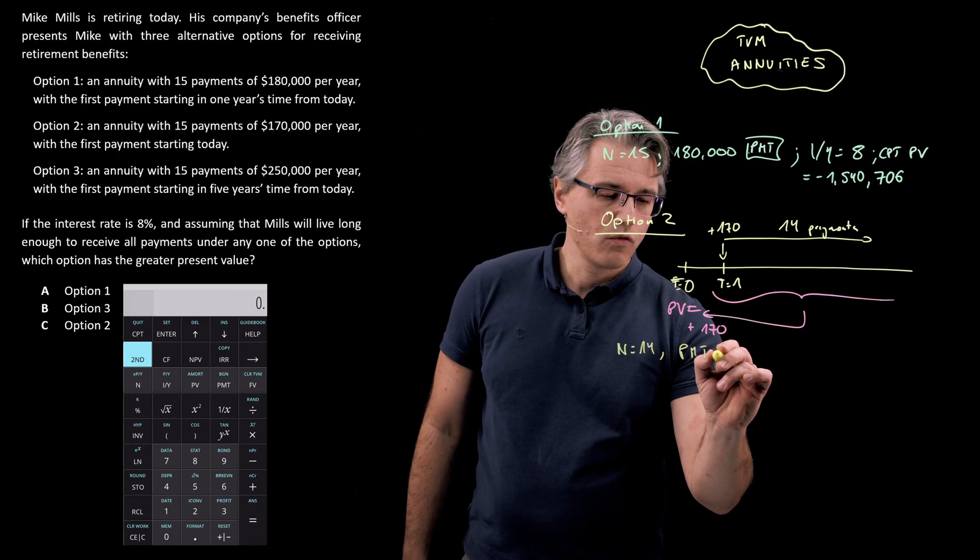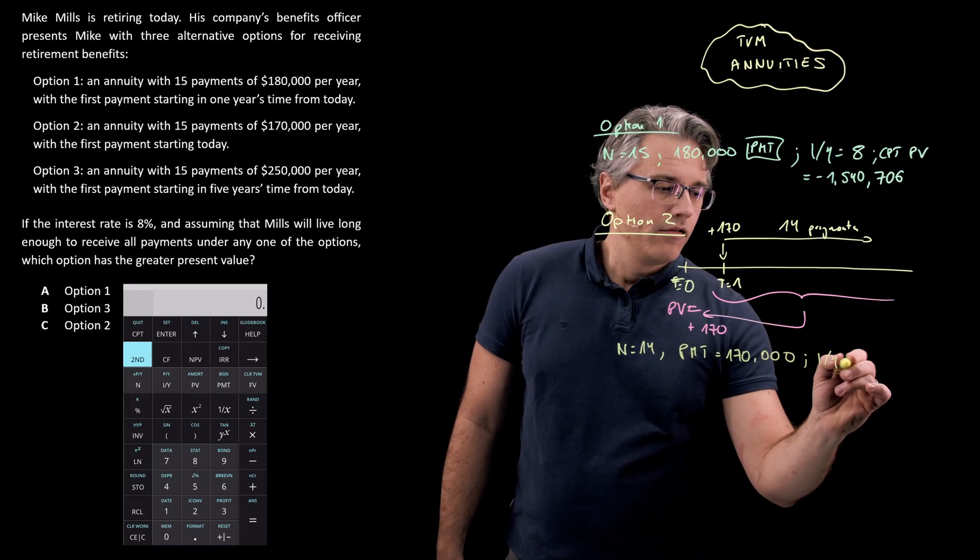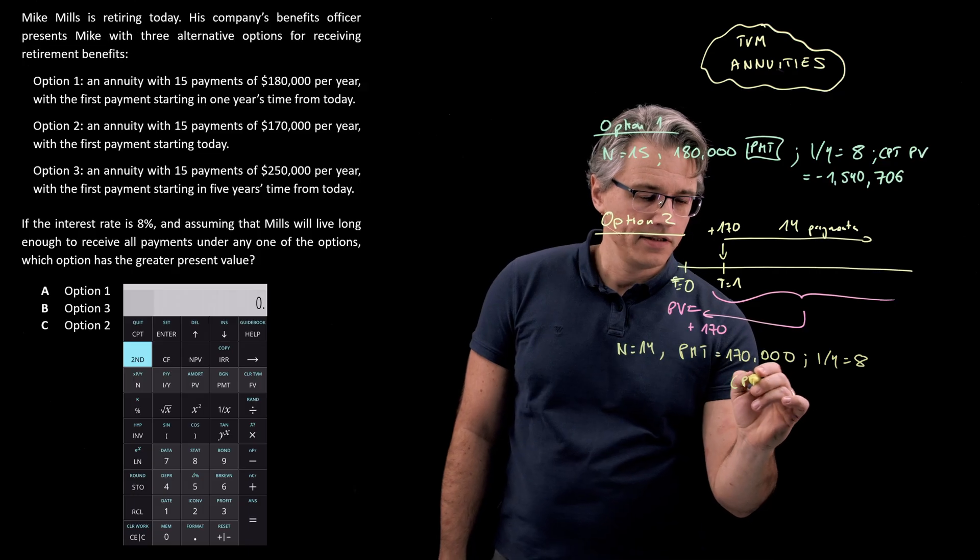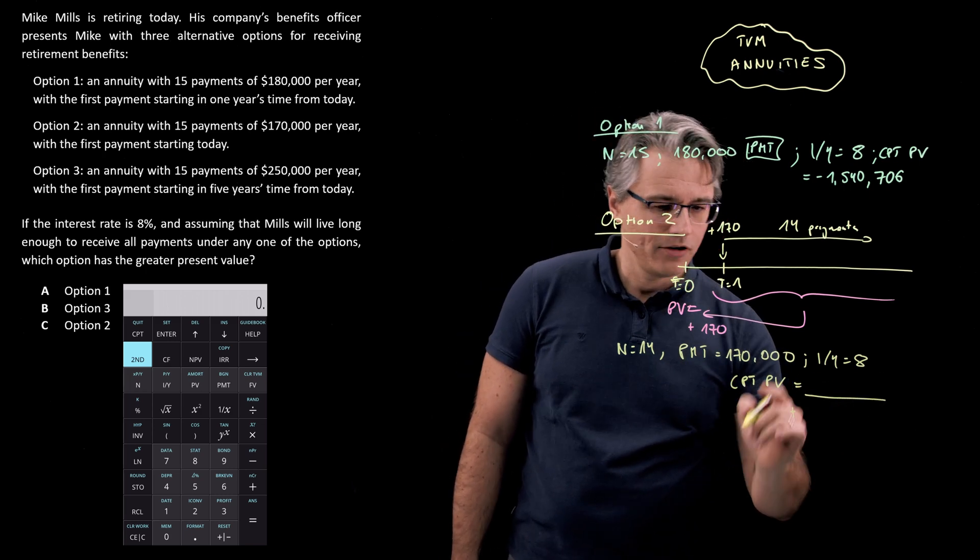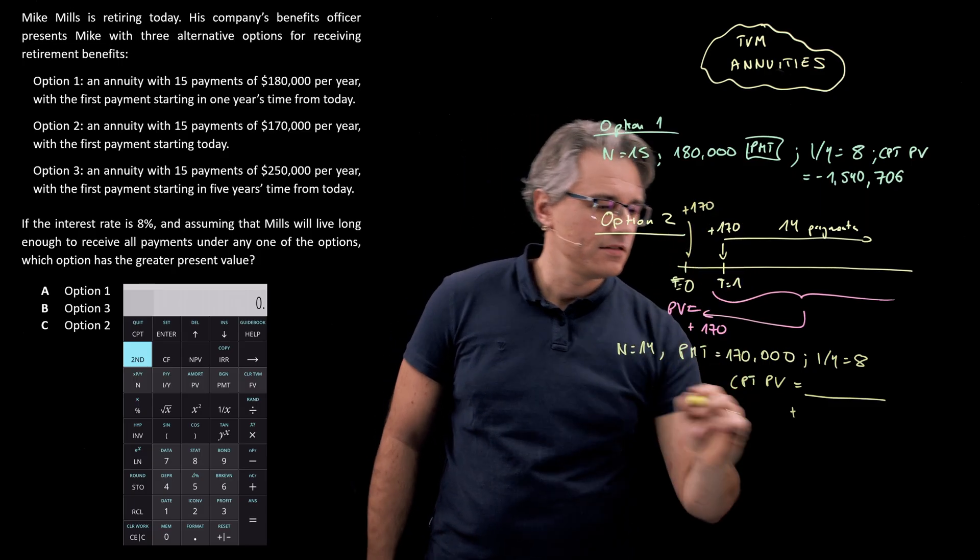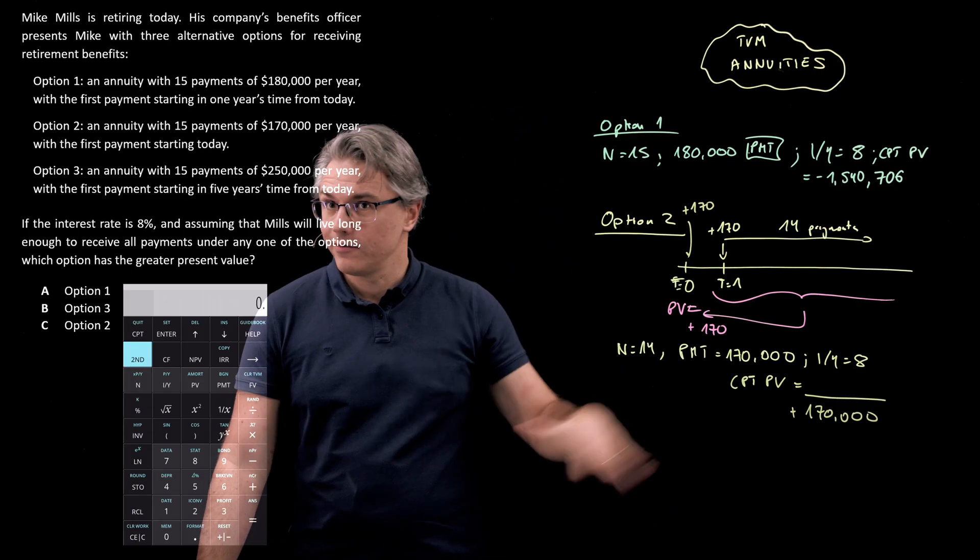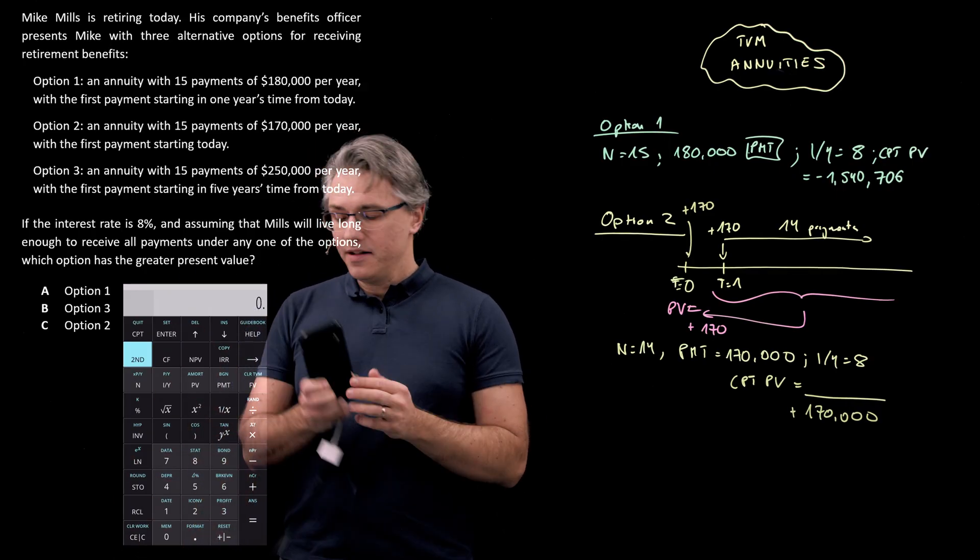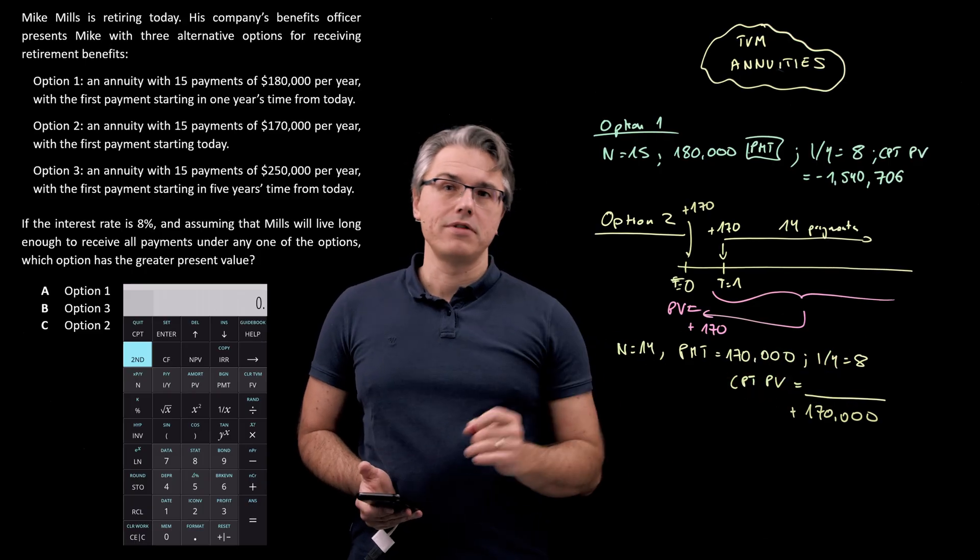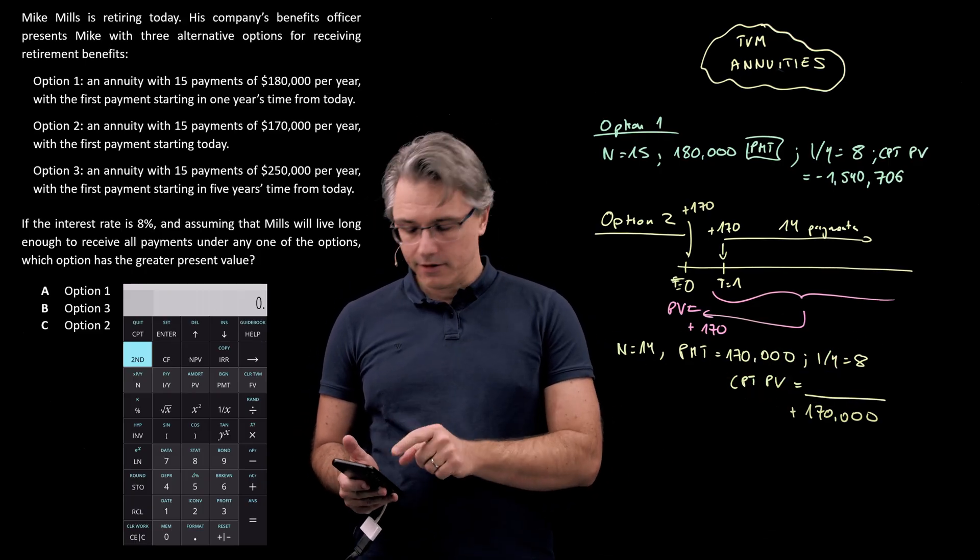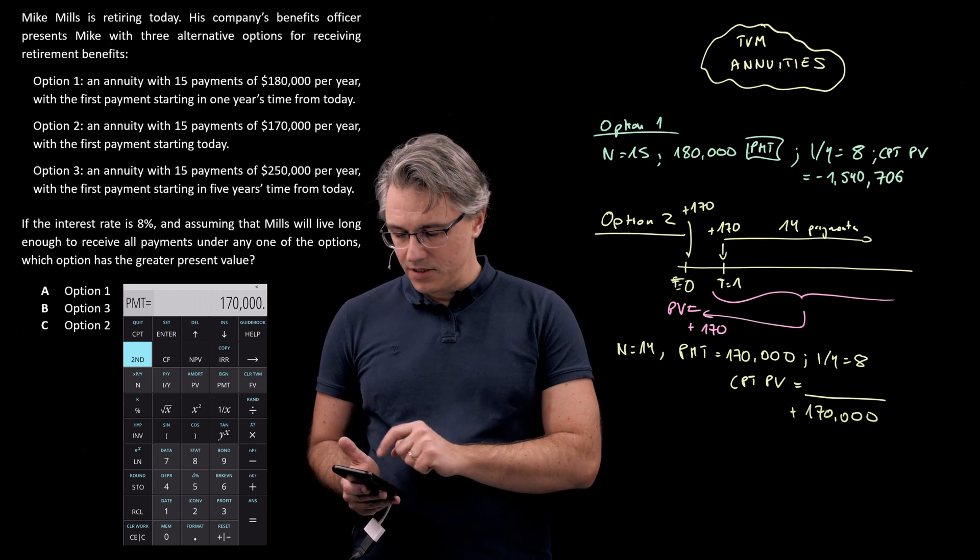I'm going to input into my calculator the following numbers: N of 14, PMT of $170,000, I over Y of 8, and I'm going to compute the CPT of PV. And whatever comes out, that's not going to be my result yet. I'm going to add on top of that this extra $170,000 to include the first one, which is not captured. There's also a way to work around this in a different manner. I don't have to necessarily clear the time value of money worksheet from the previous problem because I may want to retain this I over Y of 8.